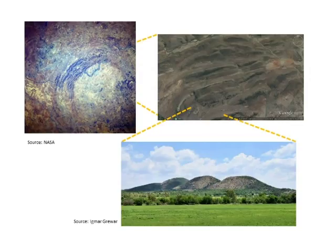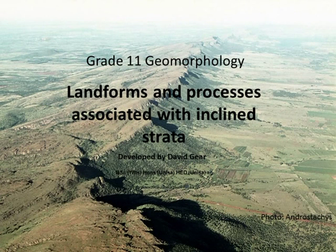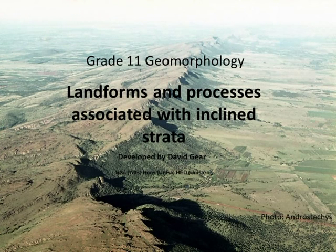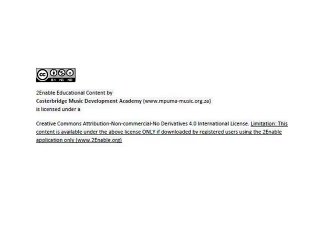So that gives us a good idea of how cuestas are formed. Hogbacks, which are just steeper versions of cuestas, form in much the same way. We haven't mentioned folded strata, where cuestas and hogbacks can form a mixed landscape environment. The processes that form the landscape once the strata is tilted are the same, whether the strata were tilted by basining, doming, or folding. If you're not sure of folding, go back to the Grade 10 video on inclined strata.